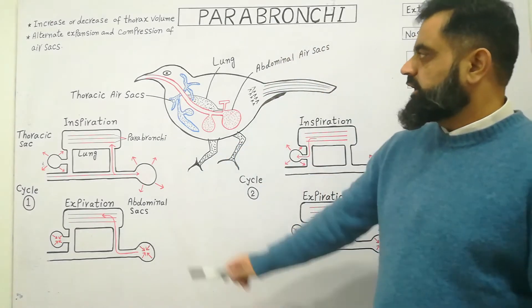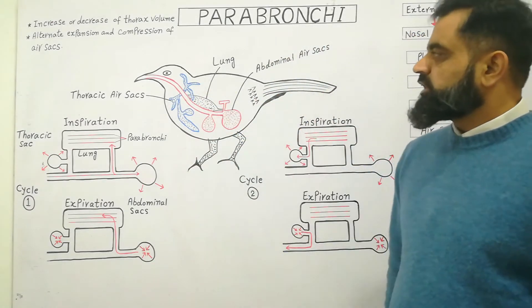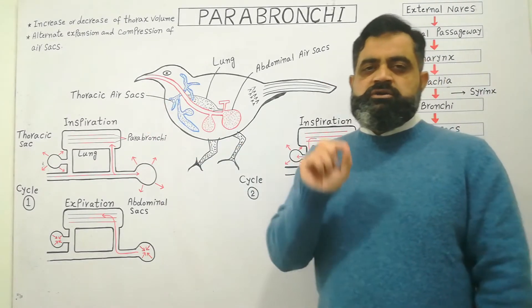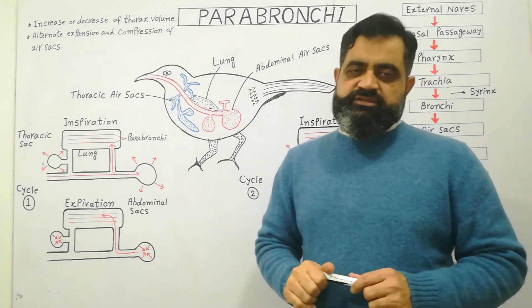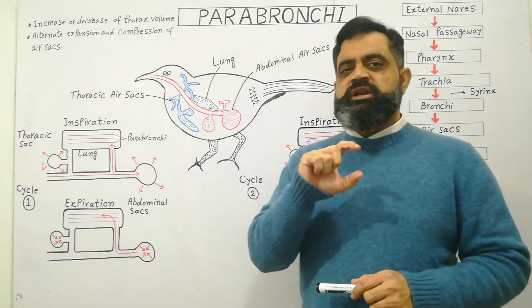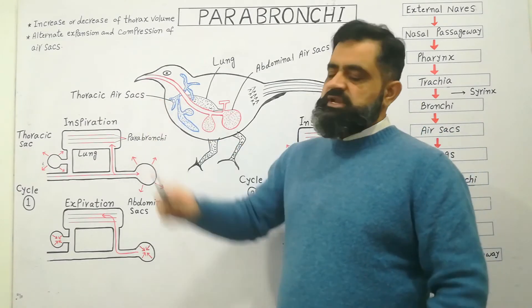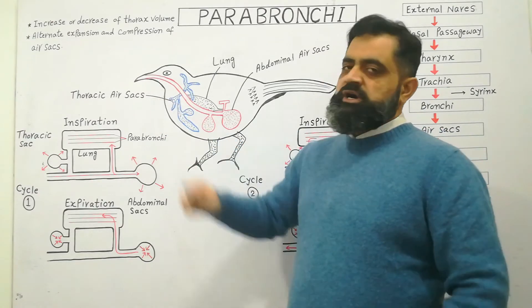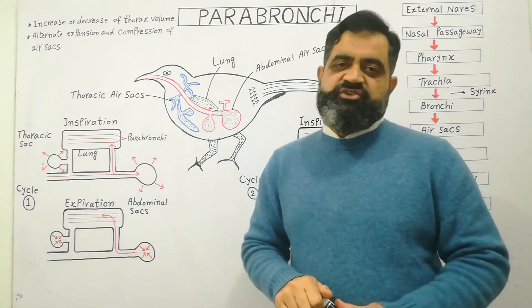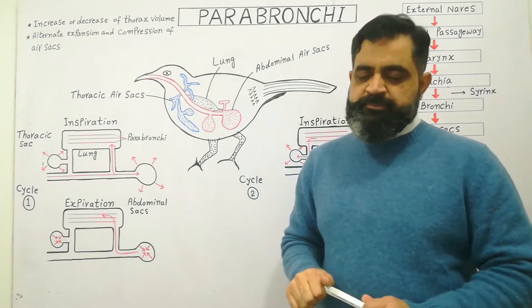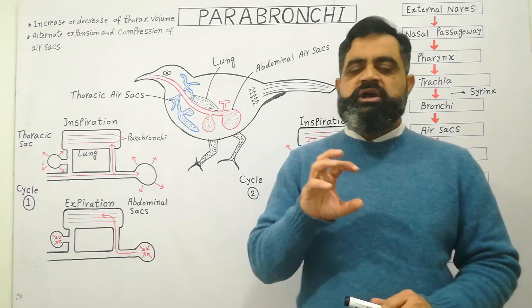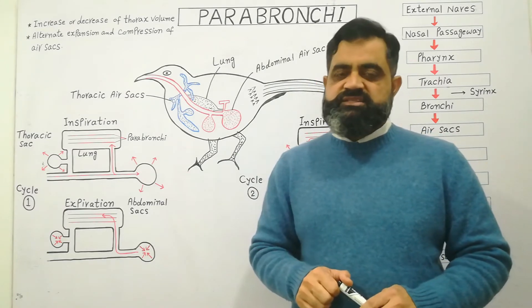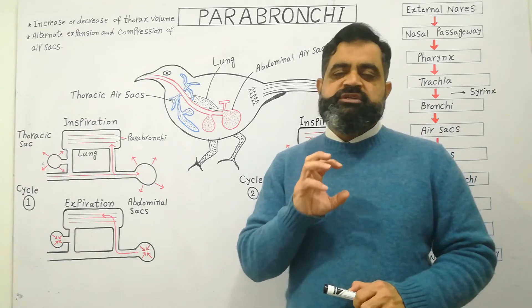I have already made a diagram for you. This is a bird. On the beak of the bird there are two tiny openings which are known as external nares, which lead into the nasal passageway. From the nasal passageway it opens into the pharynx, and pharynx opens into a tube-like structure known as the trachea, also known as the windpipe. At the end of the trachea where bronchi originate, there is a sac-like structure known as the syrinx, which helps the bird to produce different sounds.